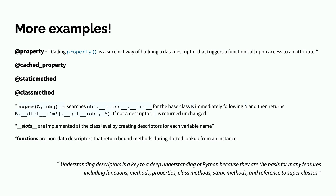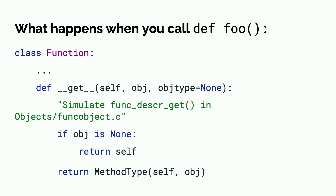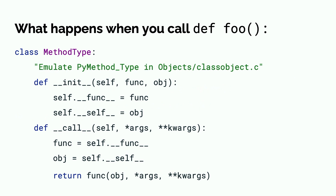Functions are actually non-data descriptors that return bound methods using dotted lookup from an instance. This is a Python approximation, or pseudocode, of what happens in CPython, the interpreter. When you instantiate a function, it is a class or functor that has a get method that, if it is not called on an instance of anything or set as an attribute of anything, it just returns itself. But if it is, it returns the method type and takes that object. The object in the get method signature is the instance it was called on, and the object type is whatever class it was called on. If you're de-referencing the attribute on the class itself, then object will be None. It takes that object, binds it into method type, and then when you call it, passes that object as the first argument into the function. This is how you get self into these functions — it's by using descriptors.